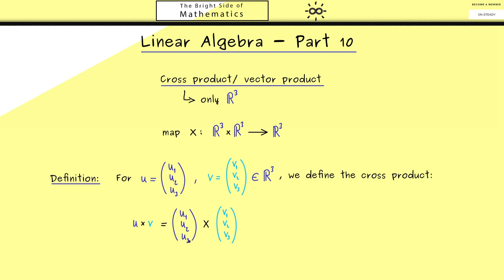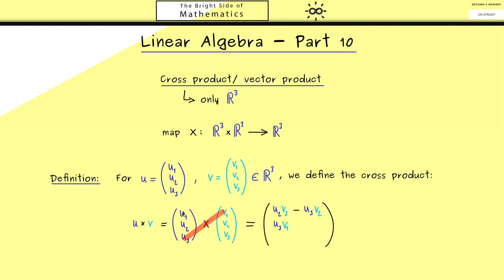So what we need are two vectors — let's call them u and v — and we can immediately write them with three components. The cross product is a new vector denoted u times v, written with the cross symbol between the two vectors. Using the components, we start in the middle and go one step down: the first component is u2 times v3, then we mirror this line and subtract u3 times v2.